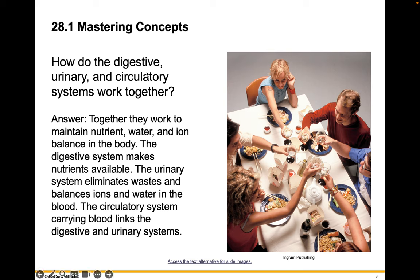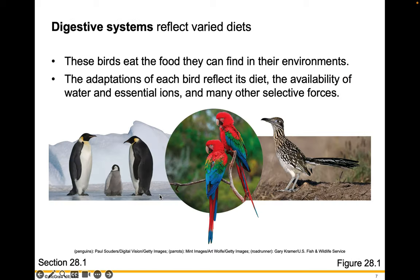How does the digestive system and the circulatory system work together? Take a moment and write down an explanation in your own words. Digestive systems reflect varied diets. These birds eat the food that they can find in their environments, and the adaptations for each bird reflect its diet, the availability of water and essential ions, and many other selective forces.